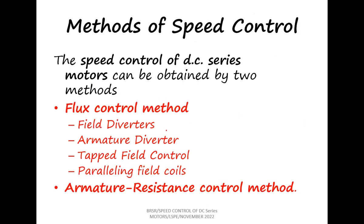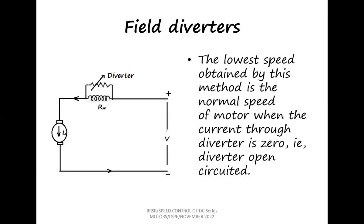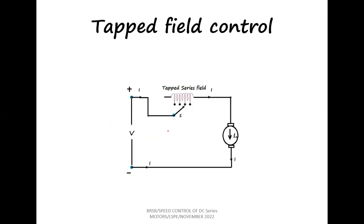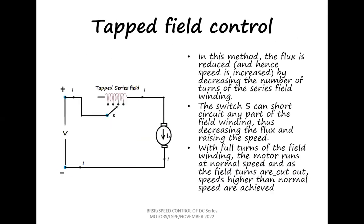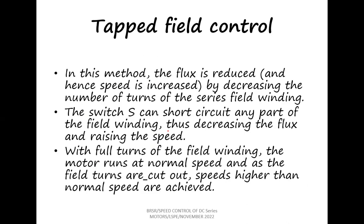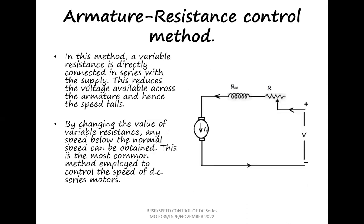In this lecture, we have seen two types of speed control for DC series motors: the flux control method and the armature control method. I hope this clarifies the speed control methods. Thank you.